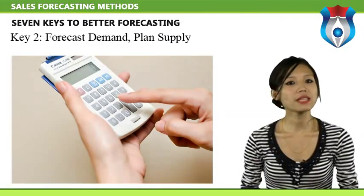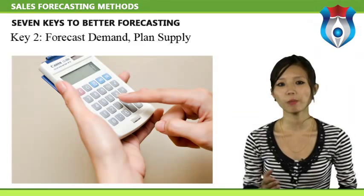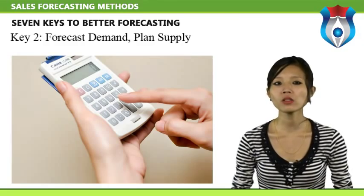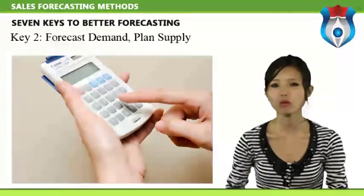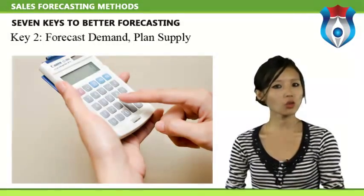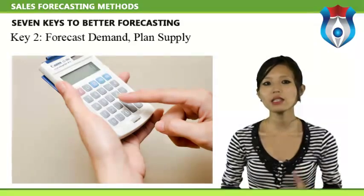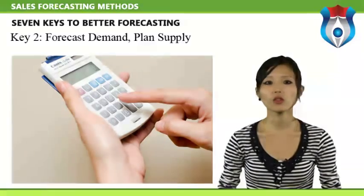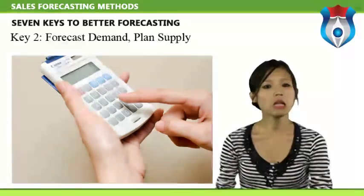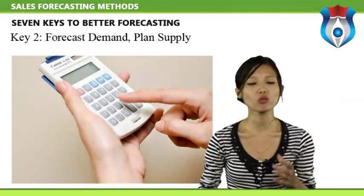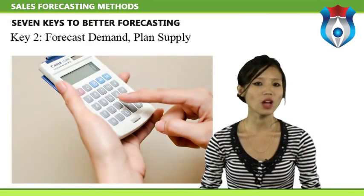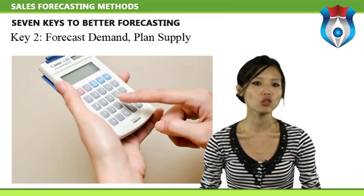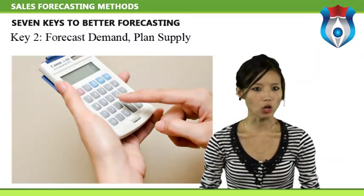One mistake many companies make is forecasting the ability to supply goods or services rather than actual customer demand. At the beginning of the forecast cycle, it is important to create predictions that are not constrained by the firm's capacity to produce. Consider a forecaster for a product who learns the sales force could sell 1,500 units per month, while current manufacturing capacity is only 1,000 units per month. If the forecaster predicts only 1,000 units based on capacity, there is no record of the unmet demand of 500 units per month, and information on where to expand manufacturing capacity is lost. Key 3: Communicate, Cooperate, and Collaborate.